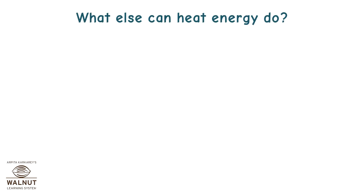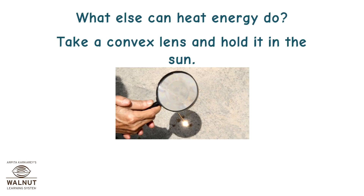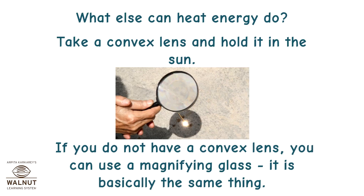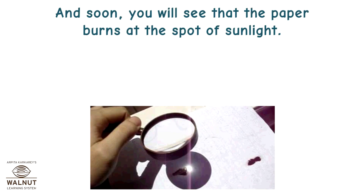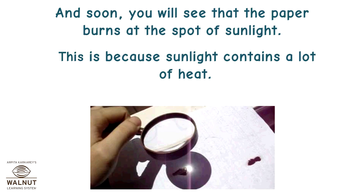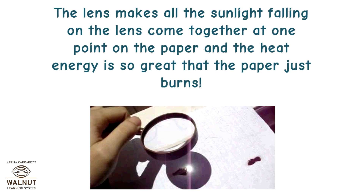What else can heat energy do? Take a convex lens — or a magnifying glass, which is basically the same thing — and hold it in the sun. Hold a paper on the other side and adjust it so that you can see a tiny spot of sunlight on the paper. Hold this position steady, and soon you will see that the paper burns at the spot of sunlight. This is because sunlight contains a lot of heat. The lens makes all the sunlight falling on it come together at one point on the paper, and the heat energy is so great that the paper just burns.